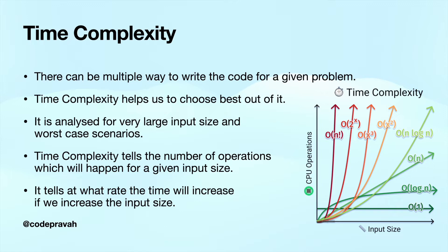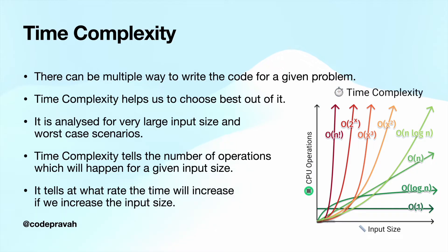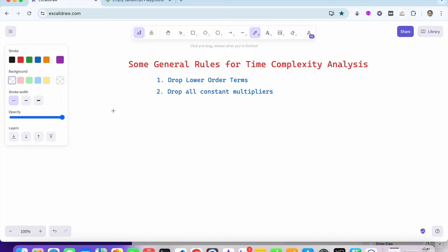Let's talk about time complexity first. Basically, time complexity is analyzed for very large input and the worst case scenarios. If you write a program, it will take different time for different machines to run it because it depends upon the machine configuration. The time complexity tells us about the number of unit operations which are going to happen for a given input size. Now we will look at some general rules while calculating the time complexity. Suppose I write a program and the time complexity calculated was something like 5n² + 3n + 7.